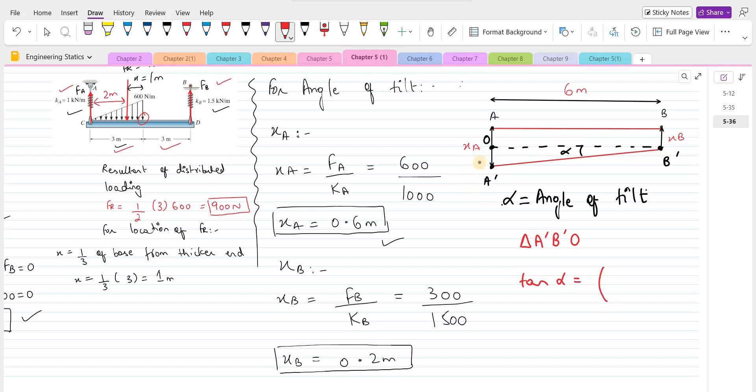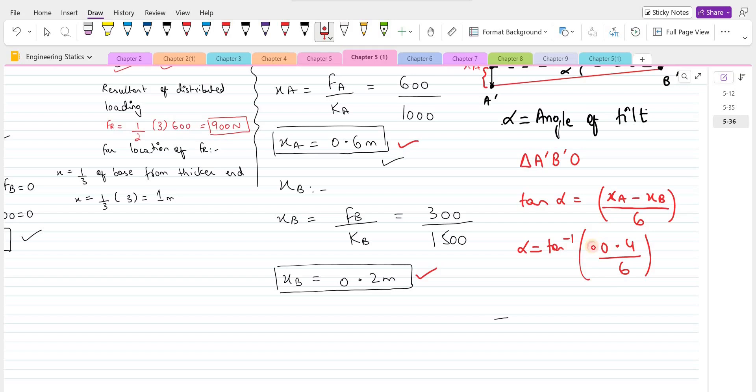So tan alpha is equals to opposite, which is in this case is this much length, so XA minus XB over the adjacent, which is 6 meters. So alpha is equals to tan inverse of XA minus XB. XA is 0.6 and XB 0.2, so XA minus XB is 0.4 meters over 6. So if we take the tan inverse of this value, the angle of tilt comes out to be 3.814 degrees.